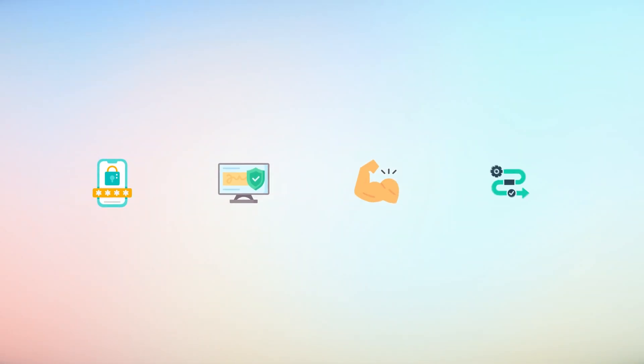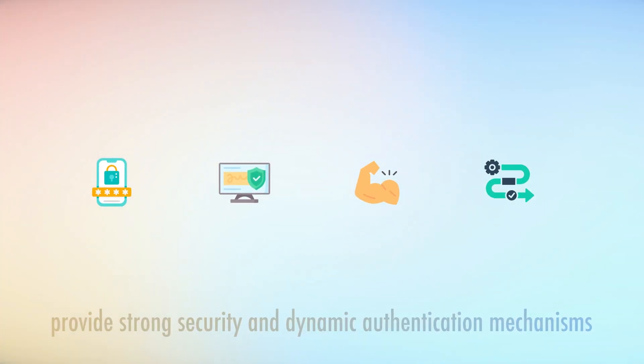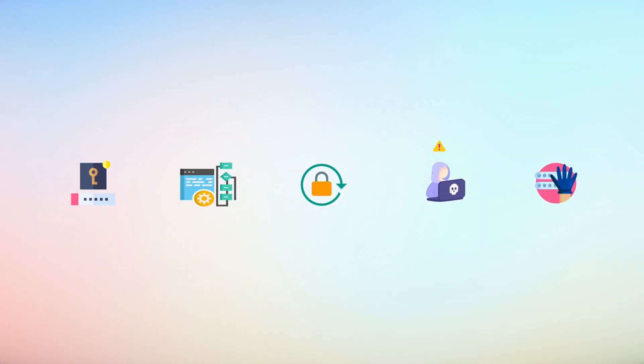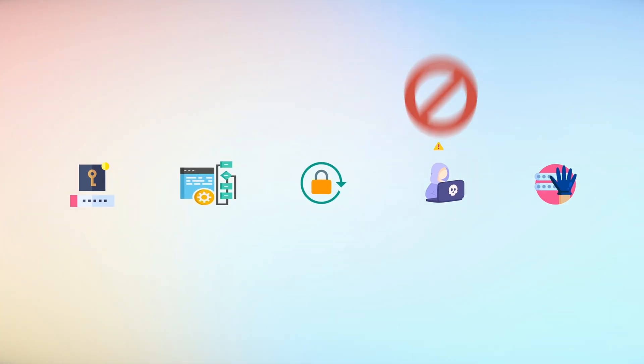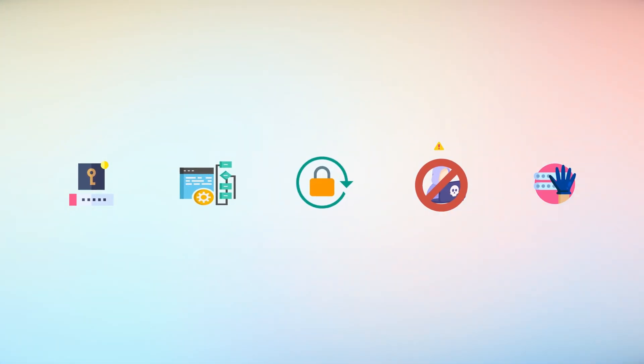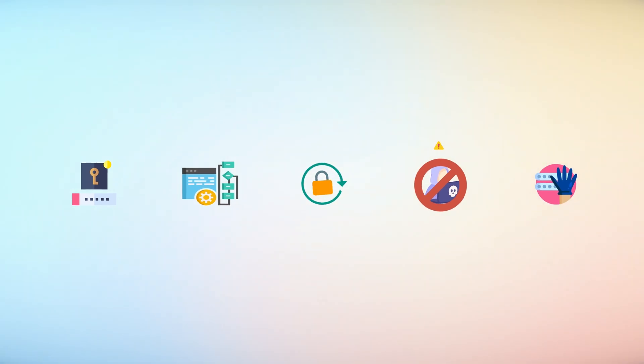In summary, Authenticator apps have enhanced online security by providing a hard-to-break and dynamic authentication mechanism. By implementing shared secret keys, time-based algorithms, and continuous OTP rotation, these apps significantly reduce the risk of unauthorized access to accounts, even if passwords are compromised. As identity thefts continue to rise, adopting technologies like Authenticator apps is essential in protecting sensitive information and maintaining user trust in online platforms.